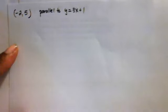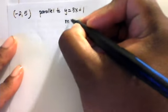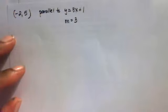We have the equation y equals 3x plus 1, which is in slope-intercept form y equals mx plus b, where m is the slope and b is the y-intercept. So the slope here is 3. If the slope of this line is 3, then the slope of a line parallel to it is also going to be 3, because parallel lines have the same slope.